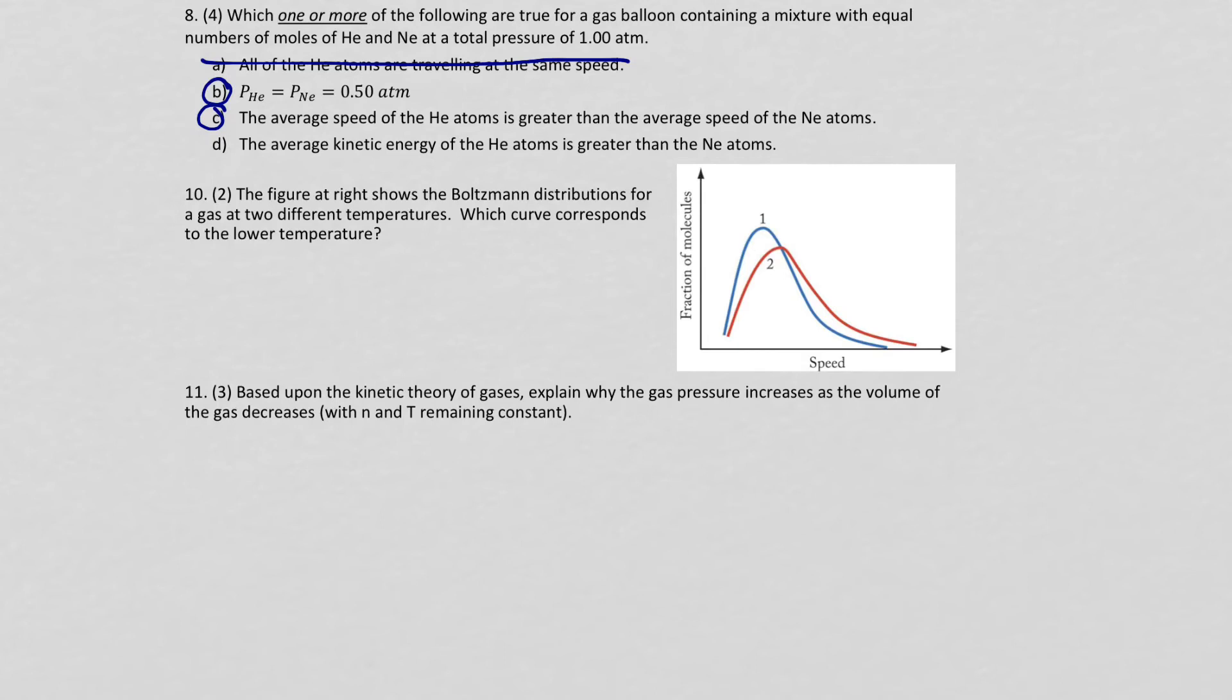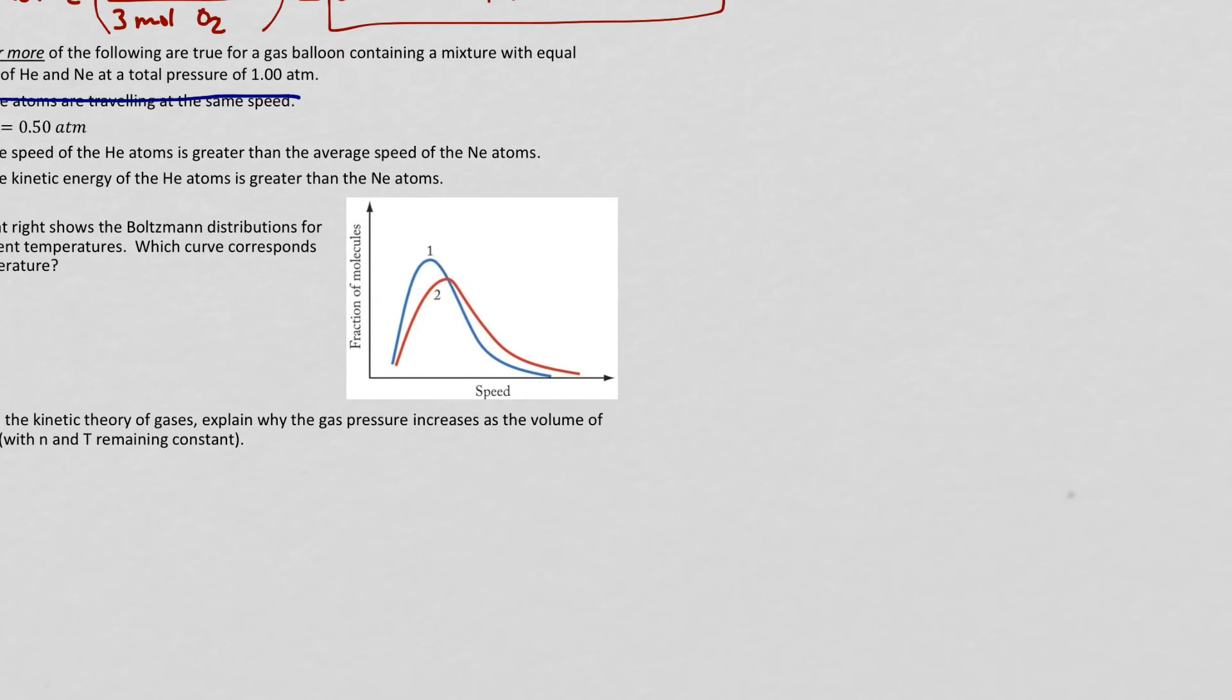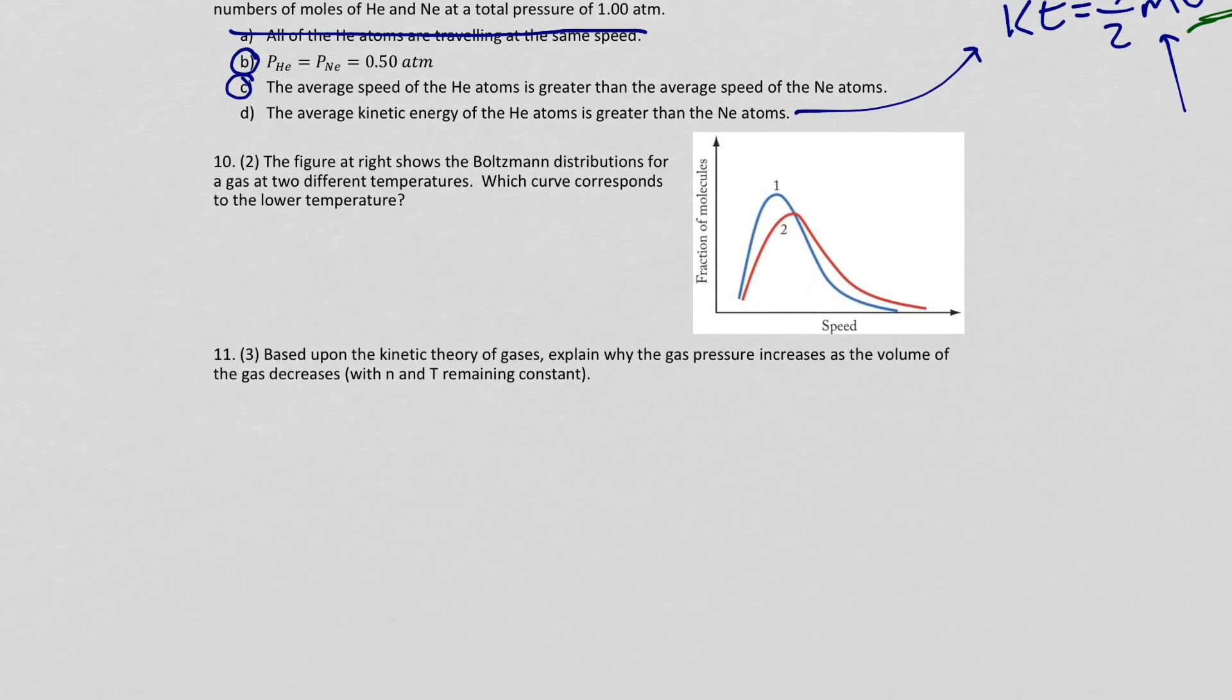And the average kinetic energy of helium atoms is greater than neon atoms. This is not necessarily true. Because if we remember from days in physics, kinetic energy equals one-half mass times velocity squared. And when we have this mass thing here, helium atoms may be traveling at a higher velocity, but they have a lower mass. Neon atoms may be traveling at a lower velocity, but they have a higher mass, so we can't necessarily say for sure which kinetic energy is greater because we don't actually know. So I would just say we can strike through letters A and letter D, and we can go with B and C being true.